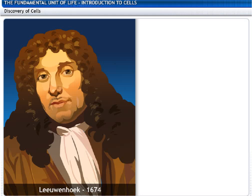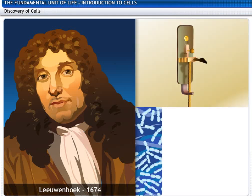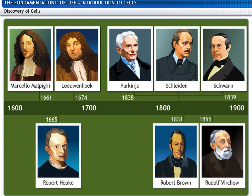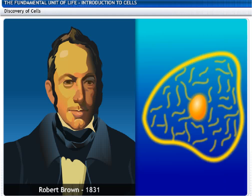Leeuwenhoek, in 1674, with an improved microscope, discovered free-living cells in pond water for the first time. Robert Brown, in 1831, discovered the nucleus in the cell.